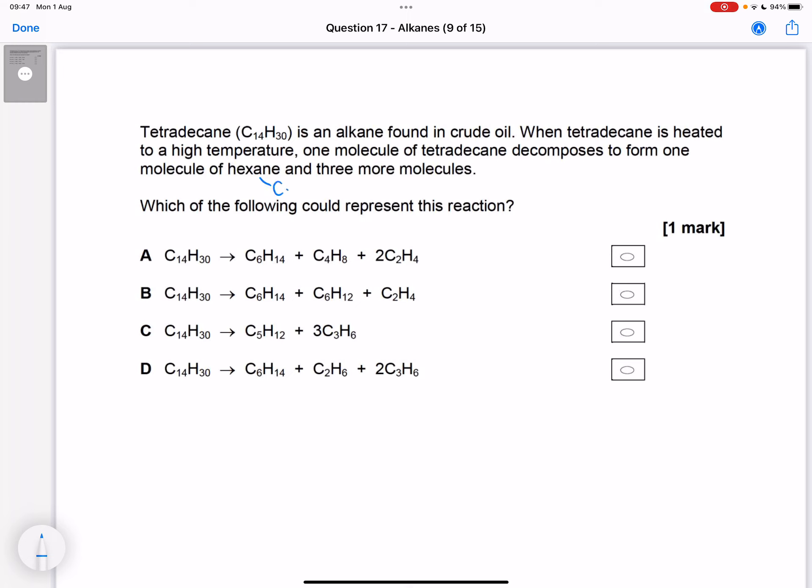of hexane, hex being 6, alkane, double it and add 2, so 14, and 3 more molecules, so 3 more things. That could be 2 of the same thing, but 3 more molecules.